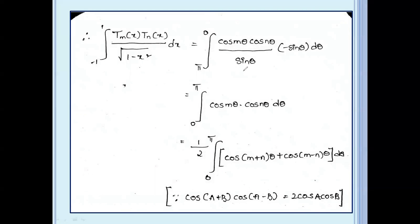Therefore, the integral from minus 1 to 1 of Tm(x) times Tn(x) divided by root(1 minus x squared) dx becomes: integral from π to 0 of cos(mθ) times cos(nθ) divided by sin θ, times minus sin θ dθ. The sin terms cancel.